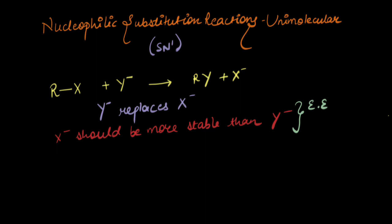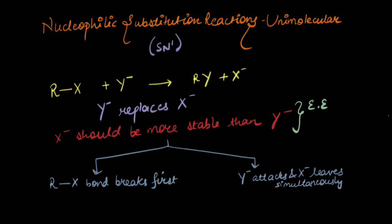Coming back to the substitution, there are two ways it can happen. Either the R-X bond breaks first, X- leaves, there's a carbocation formed, and Y- attacks later. Or Y- attacks and X- leaves simultaneously. It all happens in one step. Today, we'll be focusing on this one.